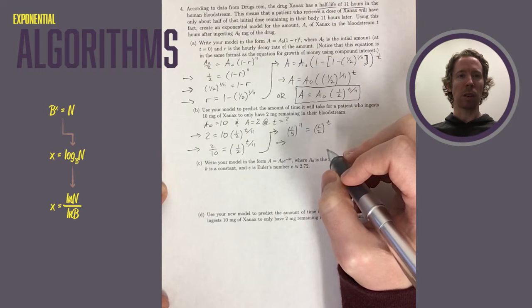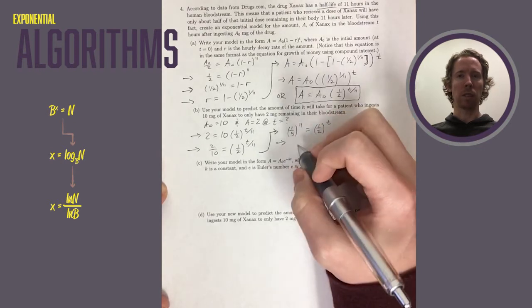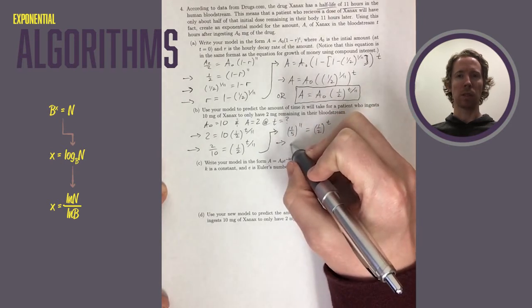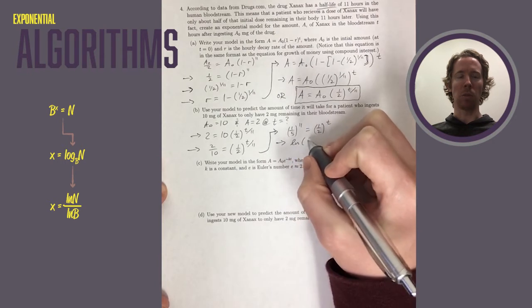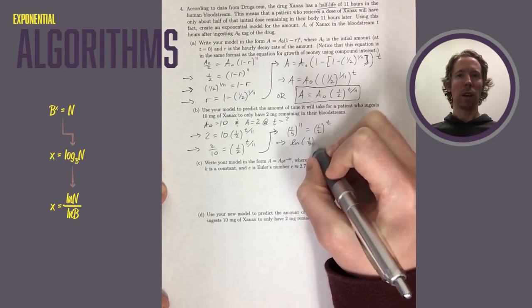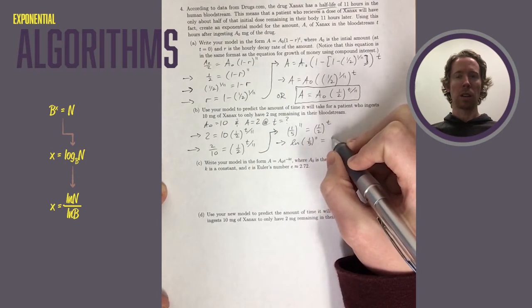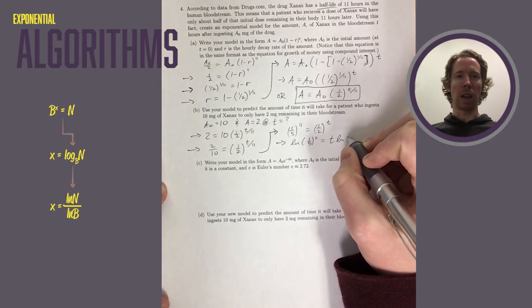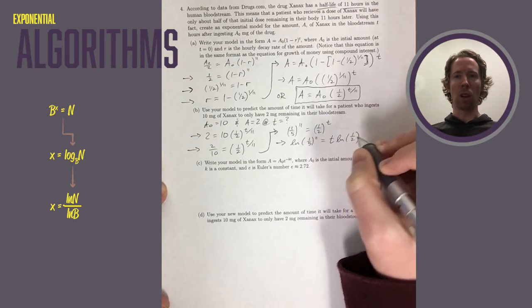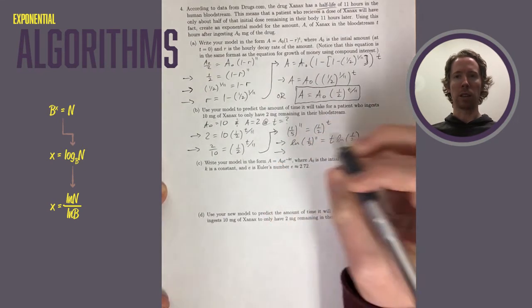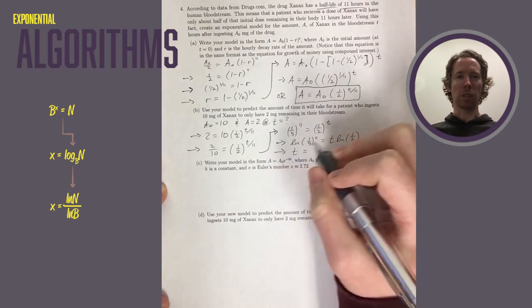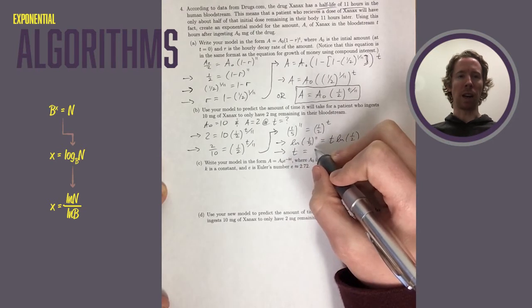That step clears up the exponent on the right a little bit. So I get this a little bit more clean equation to work with. Then if I take the natural log from there and bring the exponent down using the logarithm property, this is what I get. And I can solve for T by dividing both sides by natural log of 1 half.